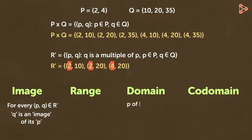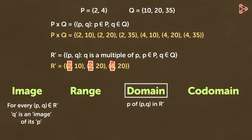The set of P of all ordered pairs P,Q in set R' is called the domain. Or we can say that the set of the first elements of all the ordered pairs in set R' is called the domain. So we can say that the domain contains the elements 2 and 4.